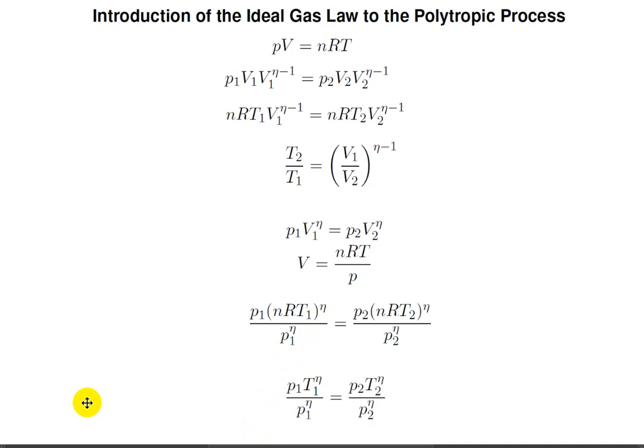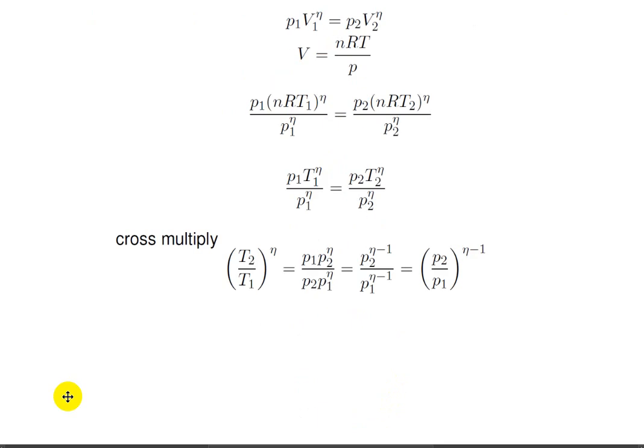Next, I cancel the nR, leaving P1 times T1 to the eta over P1 to the eta is equal to P2 times T2 to the eta over P2 to the eta. Then we cross-multiply to get the ratio T2 over T1 to the power of eta. The next term shows P1 P2 to the power of eta over P2 P1 to the power of eta. Then I combine the P2 terms in the numerator and the P1 terms in the denominator, and finally express them as a ratio to the power of eta minus 1.